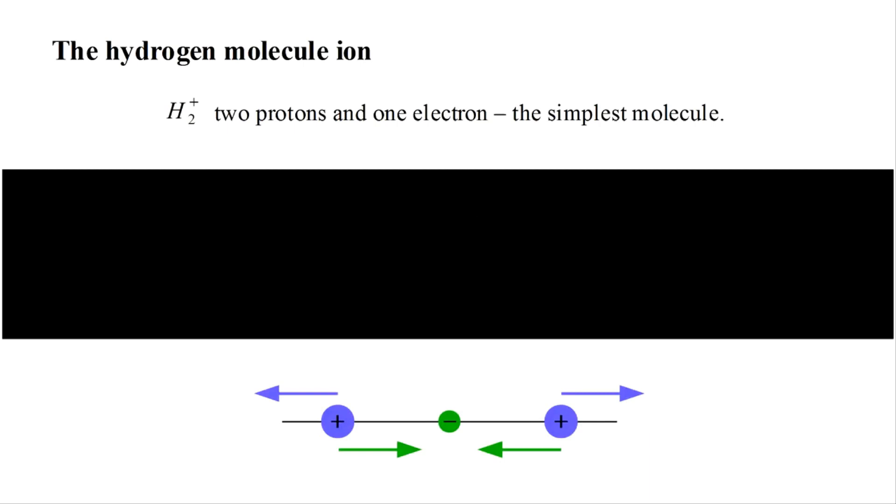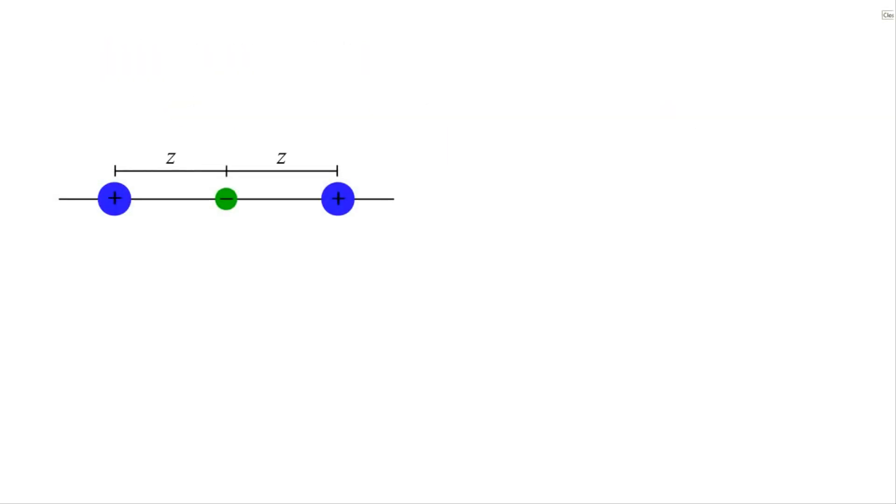Schematically, we have a system where the mutual repulsion of the two protons is presumably in equilibrium with the protons' attraction to the single electron. If we imagine the three particles at rest with the electron in the middle, a distance z from each proton, the potential energy of the system has a positive contribution of 1 over 2z, due to the proton-proton repulsion, and a negative contribution of minus 2 over z, due to the two proton-electron attractions.